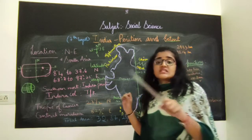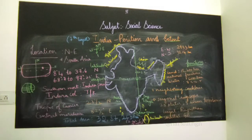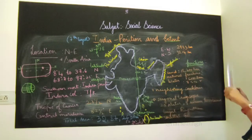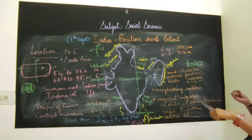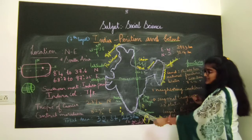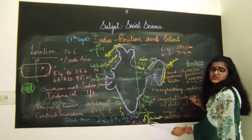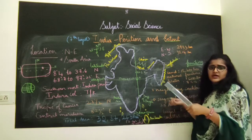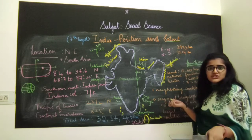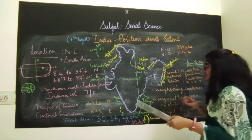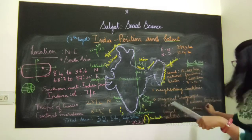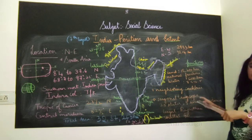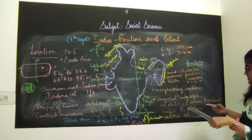India is the 7th largest country in the world — the first being Russia. India and Sri Lanka are connected by a strait called Palk Strait. If you have read the Ramayana, the bridge built by Hanuman is associated with the Palk Strait. We have 28 states and 9 Union Territories including Delhi. The largest state by area is Rajasthan, and the smallest is Goa.